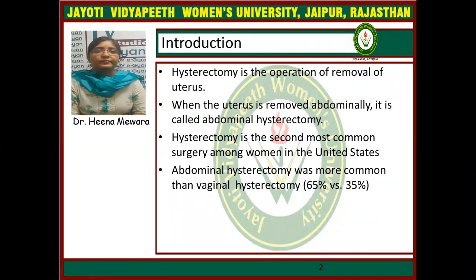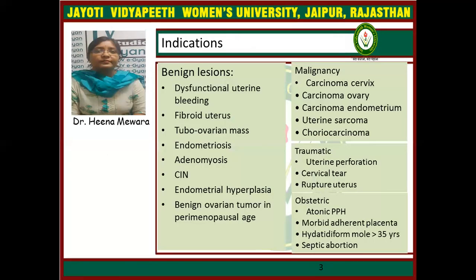Hysterectomy is an operation of removal of the uterus. When the uterus is removed abdominally, it is called abdominal hysterectomy. Hysterectomy is the second most common surgery among women in the United States. Abdominal hysterectomy is more common than vaginal hysterectomy — in 65% of cases abdominal hysterectomy is performed, while in 35% of cases vaginal hysterectomy is performed.